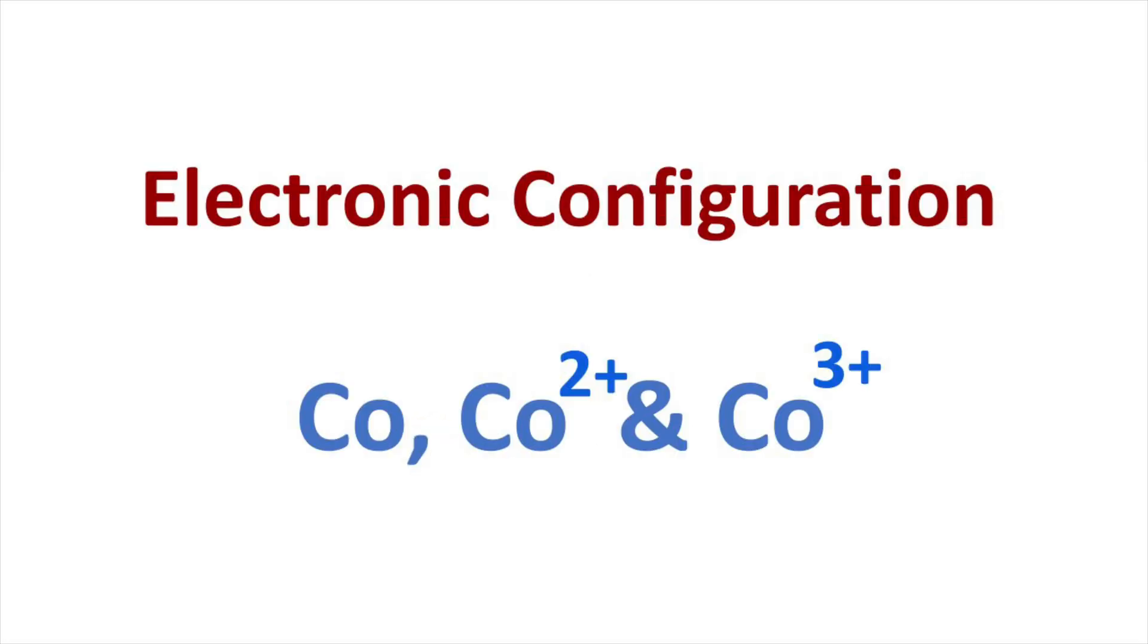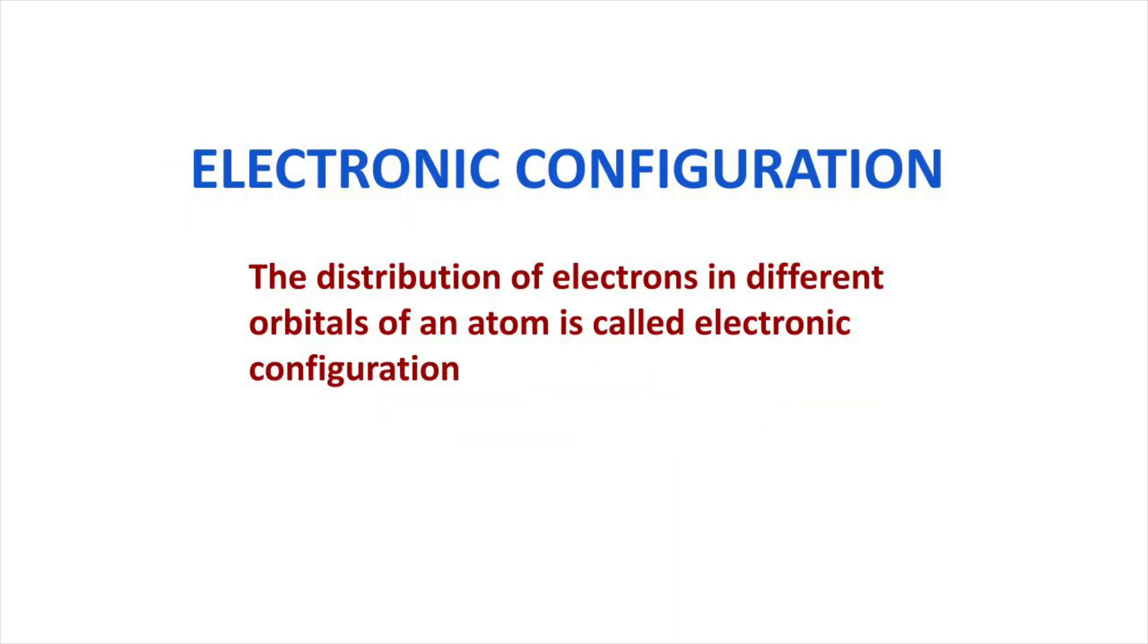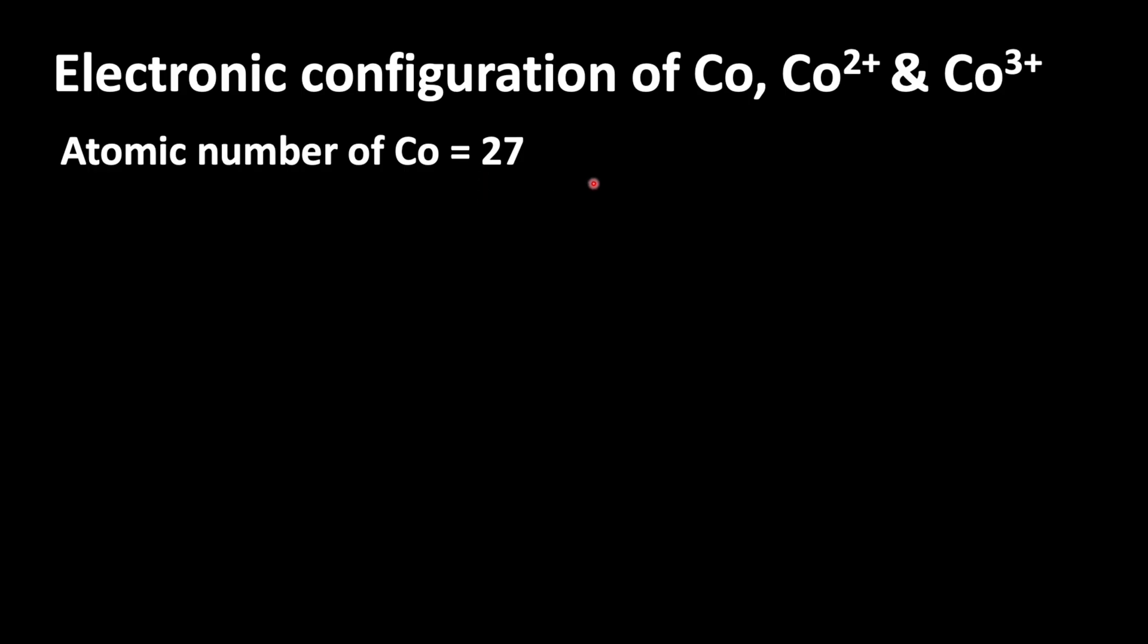Welcome to Aurora Chemistry for Everyone. In this video we will analyze how to write electronic configuration of cobalt and its ions, cobalt 2+ and cobalt 3+. The distribution of electrons in different orbitals of an atom is called electronic configuration. To write electronic configuration, we should know the atomic number. Cobalt's atomic number is 27.